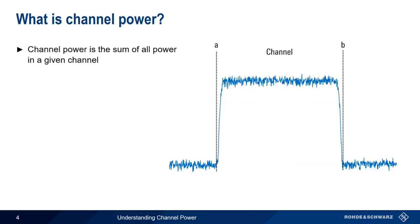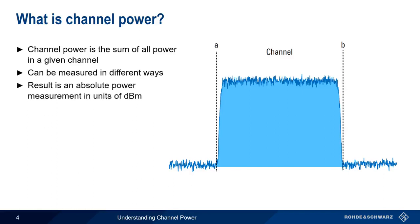Channel power is defined as the sum of all the power in a given channel. That is, it's a measure of the total power within the defined channel bandwidth. We can measure channel power in different ways, and in this presentation we'll cover the three most common methods. Channel power is an absolute power measurement with results expressed in units like dBm.